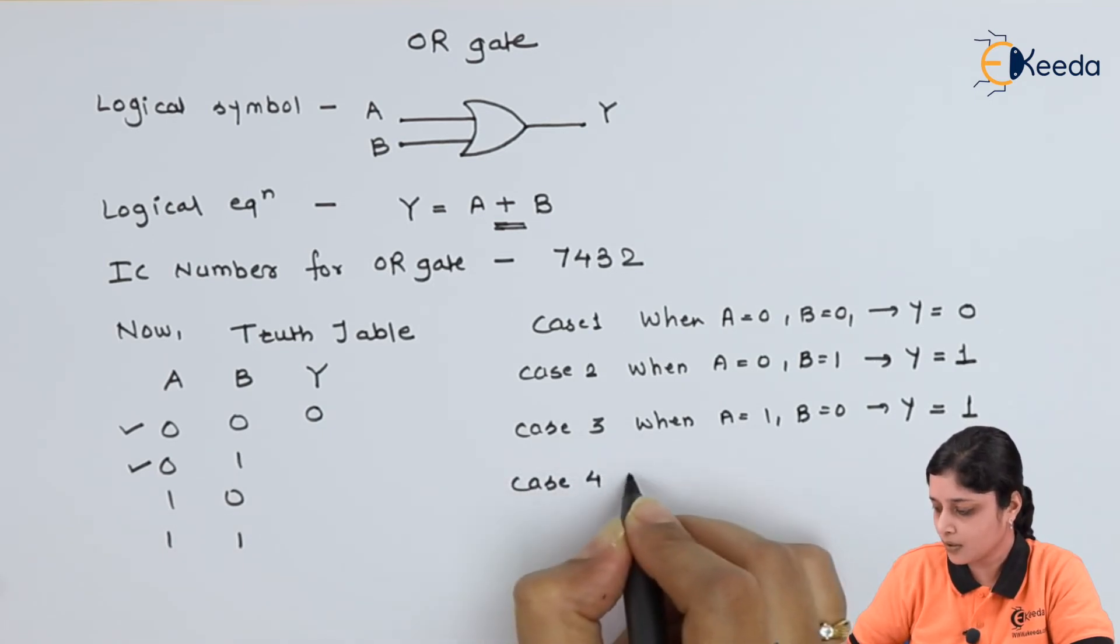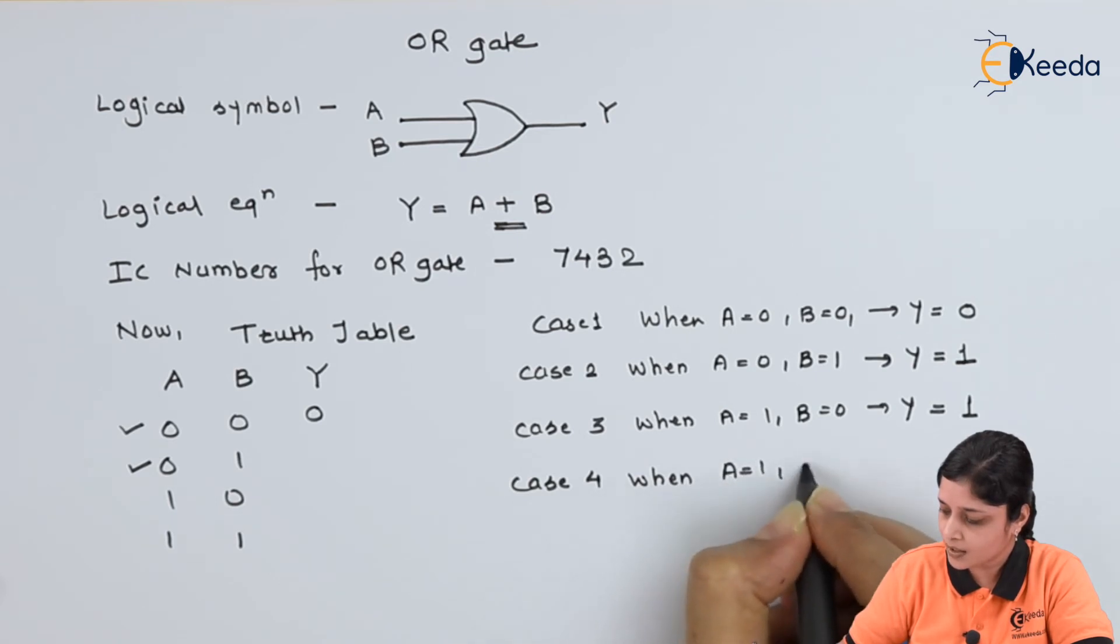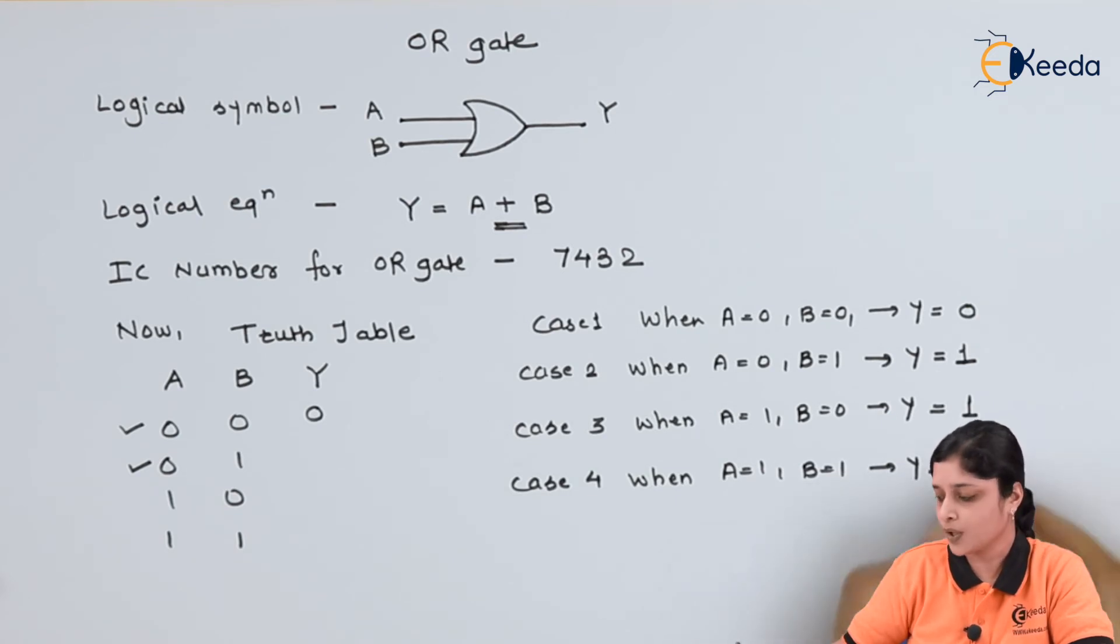Case 4: when A equals to 1, B equals to 1, your output Y is always equals to 1, because 1 logical addition 1 will give you 1.